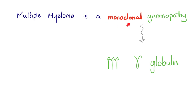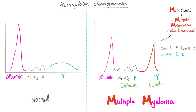Multiple myeloma is a monoclonal gammopathy — a beautiful word for an ugly disease. Monoclonal means one thing and one thing only. Gammopathy means a pathology of gamma globulin. So you have proliferation of gamma globulin only. Alpha globulin? Fine. Beta globulin? Fine. Albumin? Fine. It's only the gamma globulin. Normally, albumin is the most abundant plasma protein, and then the globulins are alpha, beta, and gamma.